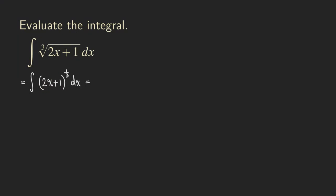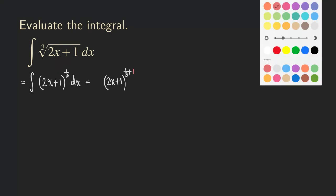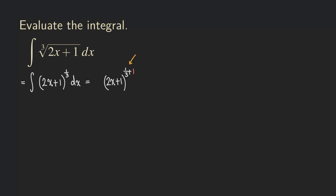So what do we get here? We are going to have — leave some space in the front — so we have 2x plus 1, and then the 1 over 3 right here, and then we need to add 1 to the power. Once we add the 1, we are going to get 1 over 3 plus 1, which is 3 over 3, giving us 4 over 3. So our new power would be 4 over 3. We multiply by the reciprocal of this new power, which is 3 over 4, so we put 3 over 4 in the front.